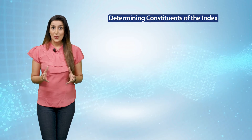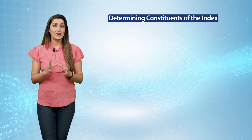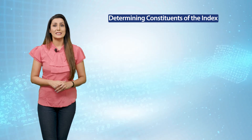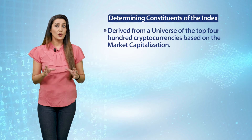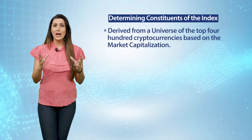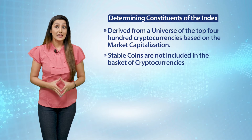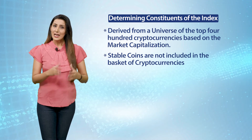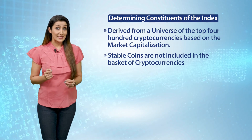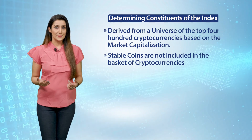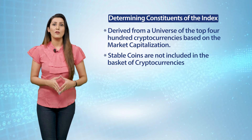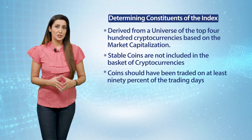Turning to the eligibility criteria for coins to be included as constituents of IC15: the index constituents are derived from a universe of the top 400 cryptocurrencies based on market capitalization. Stablecoins — which are pegged to fiat currencies such as the US dollar or Indian rupee — are not included in the basket, as their volatility is extremely low, making them ineligible as index constituents.